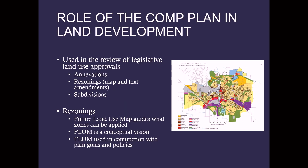In terms of the land use development process, the comprehensive plan is used most often in the review of legislative land use approvals — including annexations, rezonings, and subdivisions. Rezonings are the most common type of legislative approval that require consistency with the comprehensive plan, and the future land use map guides what zoning classifications can be applied, though there is some flexibility. The comp plan is non-regulatory and conceptual, and its future land use map designations are general in nature and should be used in conjunction with the plan's goals and policies.